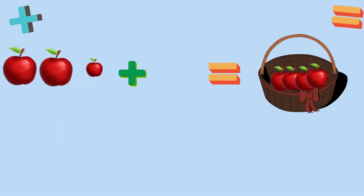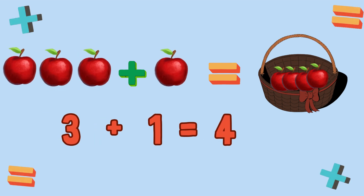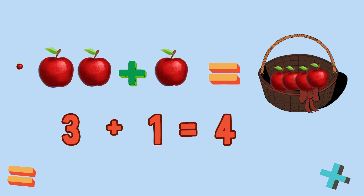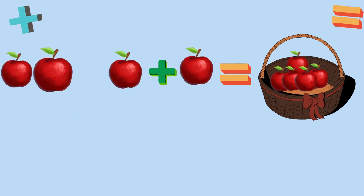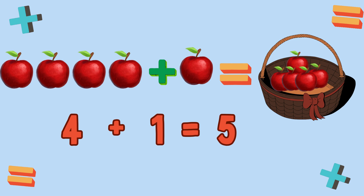How many apples are here in total? 3 apples plus 1 apple — there are 4 apples in the basket. 3 plus 1 is equal to 4. How many apples are here in total? 4 apples plus 1 apple — there are 4 apples in the basket. 4 plus 1 is equal to 5.